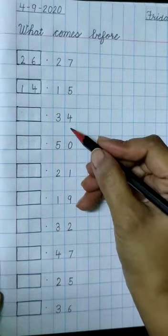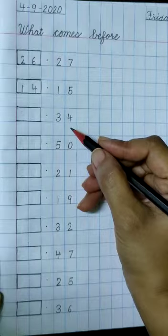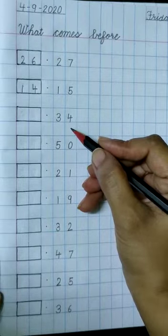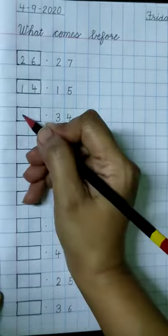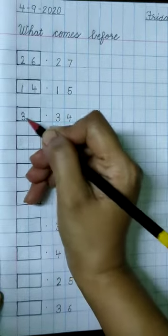Now what comes before 34? 33, 34. 33 comes before 34. So write 33 here.